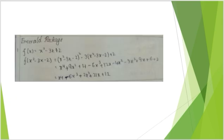Emerald package: if f: R→R is defined by f(x) = x² - 3x + 2, then find f(x² - 3x - 2). First write the given information. Then f(x² - 3x - 2) = (x² - 3x - 2)² - 3(x² - 3x - 2) + 2. Expanding: (x² - 3x - 2)² gives x⁴ + 9x² + 4 - 6x³ - 6x² + ... and combining all terms.